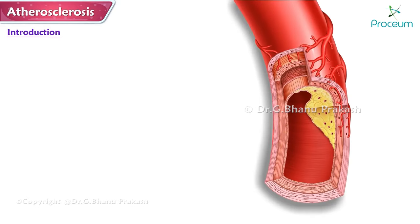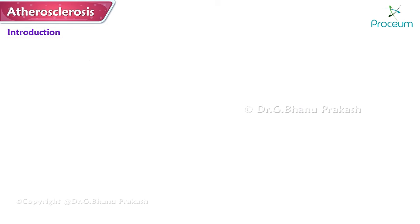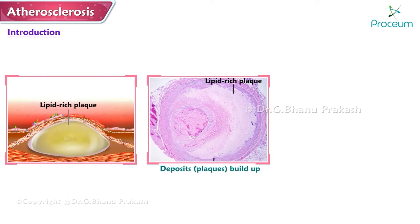Atherosclerosis is the most common arteriosclerotic pattern with notable clinical significance. It affects large to medium-sized muscular arteries and elastic arteries, and sometimes veins. Atherosclerosis represents the lipid-rich plaques that deposit on the intima walls over time. These deposits build up, harden, and narrow the lumen of the artery.